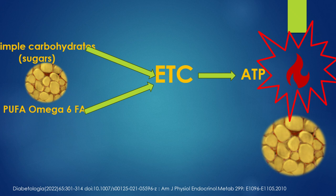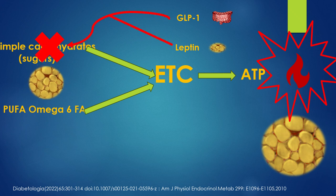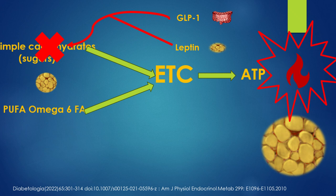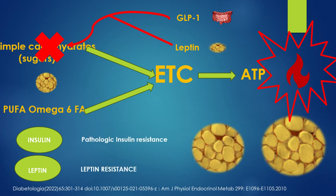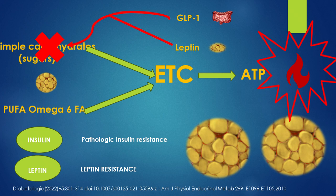So if you eat a lot of carbohydrates together with omega-6 fatty acids and vegetable oils, it will increase your electron transport chain activity and make more ATP. There's more energy, and if you have more energy than you burn, your fat cell will hypertrophy — hence obesity. Our body always tries to maintain homeostasis, so GLP-1 and leptin come to the rescue. The fat cell produces leptin, and together with your intestines producing GLP-1, they stop your appetite so you don't eat and lose weight.